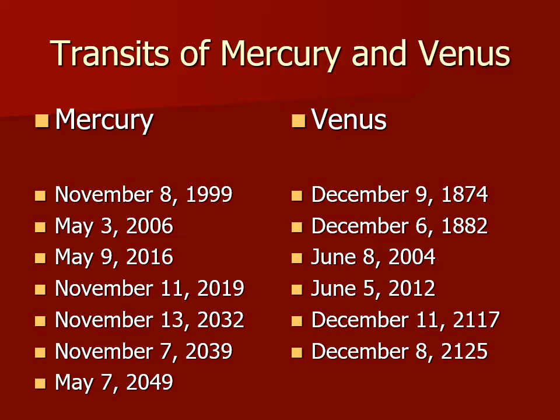I've actually seen Mercury transit the sun several times. In 1999, it transited the sun and we had telescopes set up on campus to observe that event. We did the same thing in 2006. In 2016 it transited the sun, but was not visible from Texas. In 2019 it did it again and we set up and observed it — that was also visible from Texas.